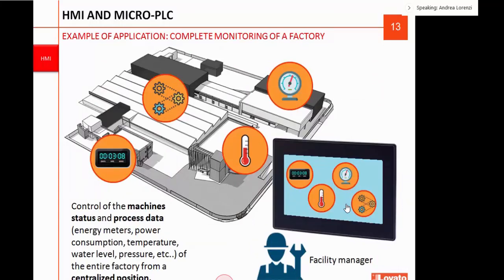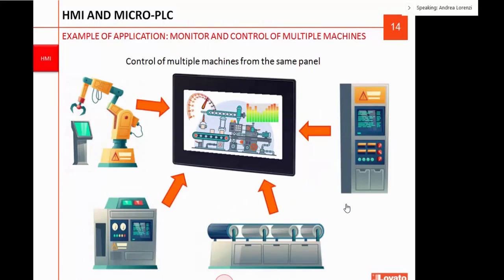Here is an example of a factory monitoring application where there are many types of devices: controllers, sensors, and counters. From the HMI display, the facility manager can control machine status and process data — reading measures like energy, power consumption, temperature, water level, and so on — from a centralized position without needing to go to different places to read different sensors. HMI can also control multiple machines from the same panel by connecting all machines through their communication ports, allowing not just monitoring but also commanding. Functions available include buttons to send commands, charts, data logging, and viewing process data.